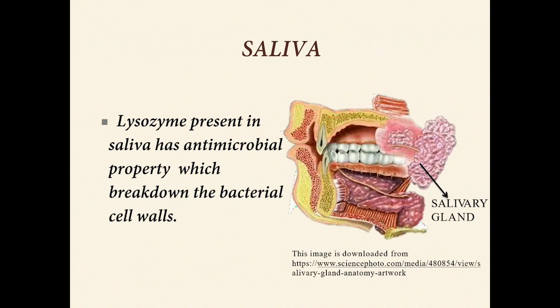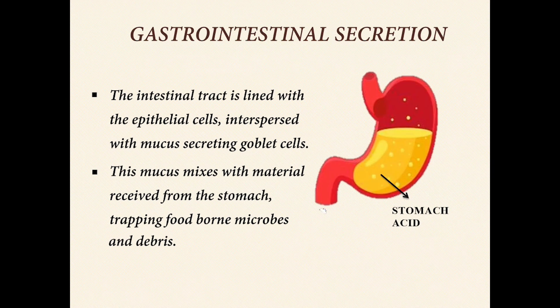Saliva: lysozyme present in saliva has antimicrobial properties and breaks down bacterial cell walls. Gastrointestinal secretion: the intestinal tract is lined with epithelial cells interspersed with mucus-secreting goblet cells. This mucus mixes with material received from the stomach, trapping foodborne microbes and debris.